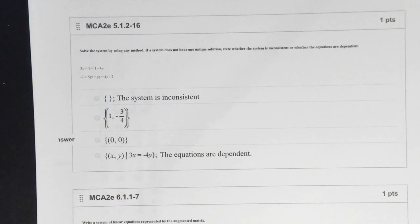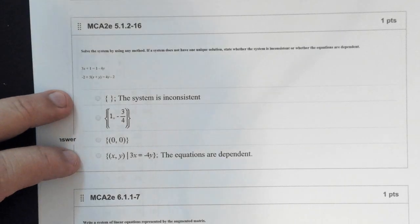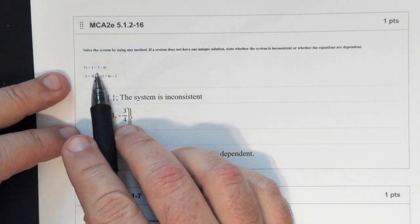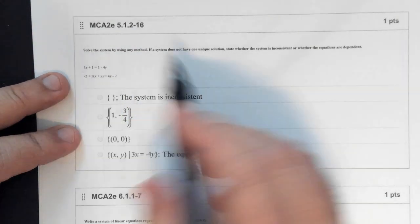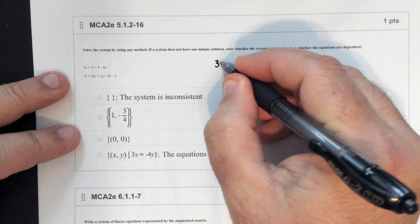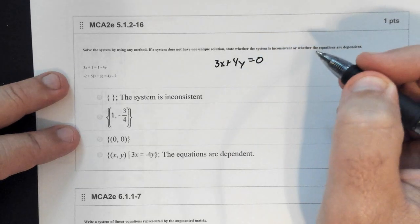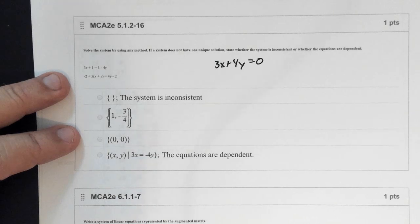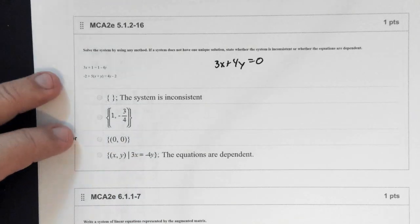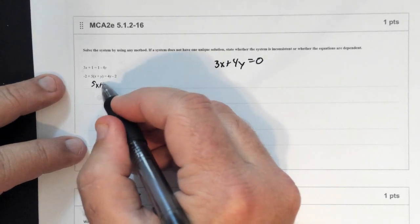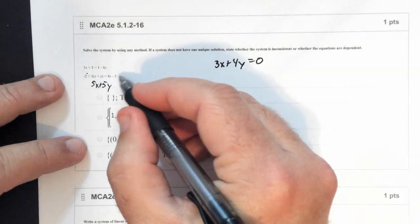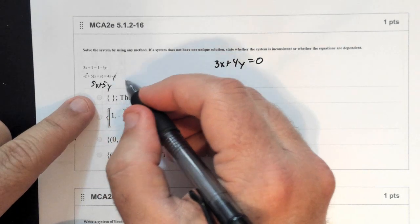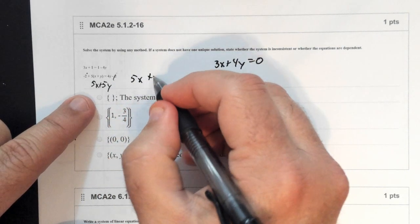Same thing with this one — you can use any method you want. If you remember the addition method, you want to get everything in standard form, which would be 3x plus 4y equals 0. Then you distribute: the negative 2's cancel out, the 4y comes over, giving you 5x plus y equals 0.